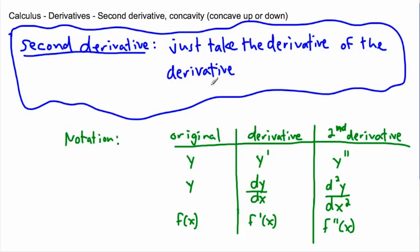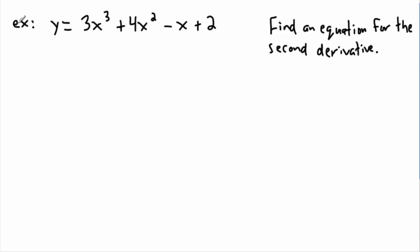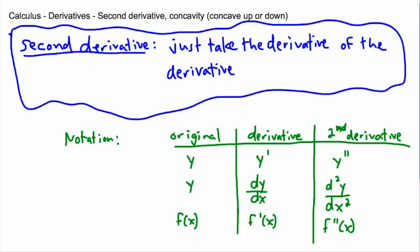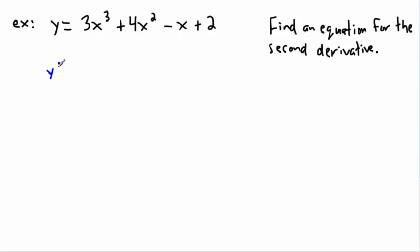Before going over what the second derivative does for us, let's do the mechanics. Take the example y equals 3x cubed plus 4x squared minus x plus 2, and our goal is to find the second derivative. Since the second derivative is just the derivative of the derivative, we first find y-prime. For 3x cubed, the 3 comes in front: 3 times 3 is 9, times x to the power of 2. For 4x squared: 2 times 4 is 8, times x to the power of 1.